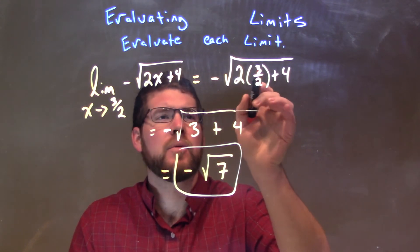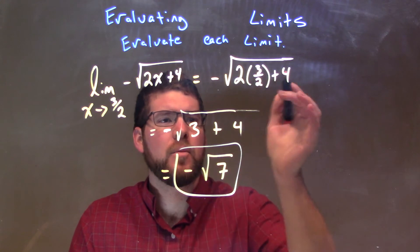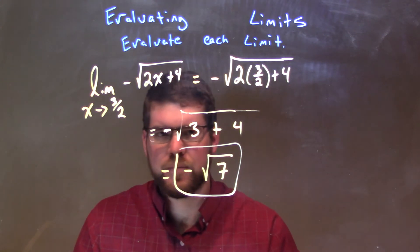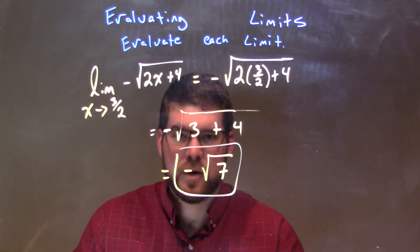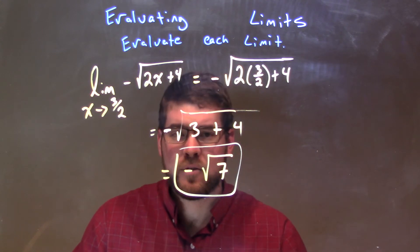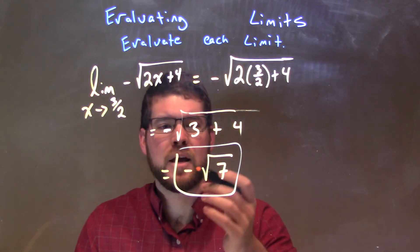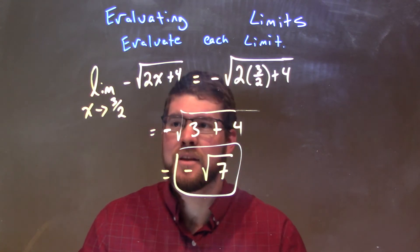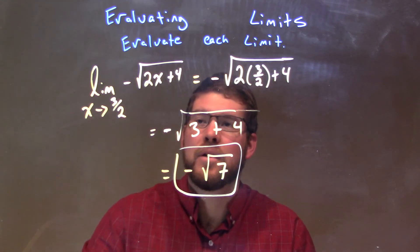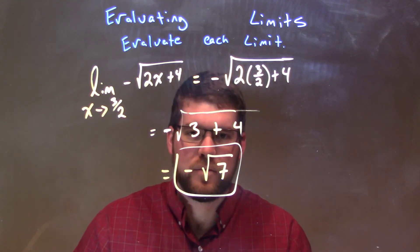3/2 in for x. 3/2 times 2 is 3, bring down the 4. Well, 3 plus 4 is 7. And so, our final answer here, in simplest form, is the negative square root of 7, and that is the limit as x approaches 3/2 of negative square root of 2x plus 4.